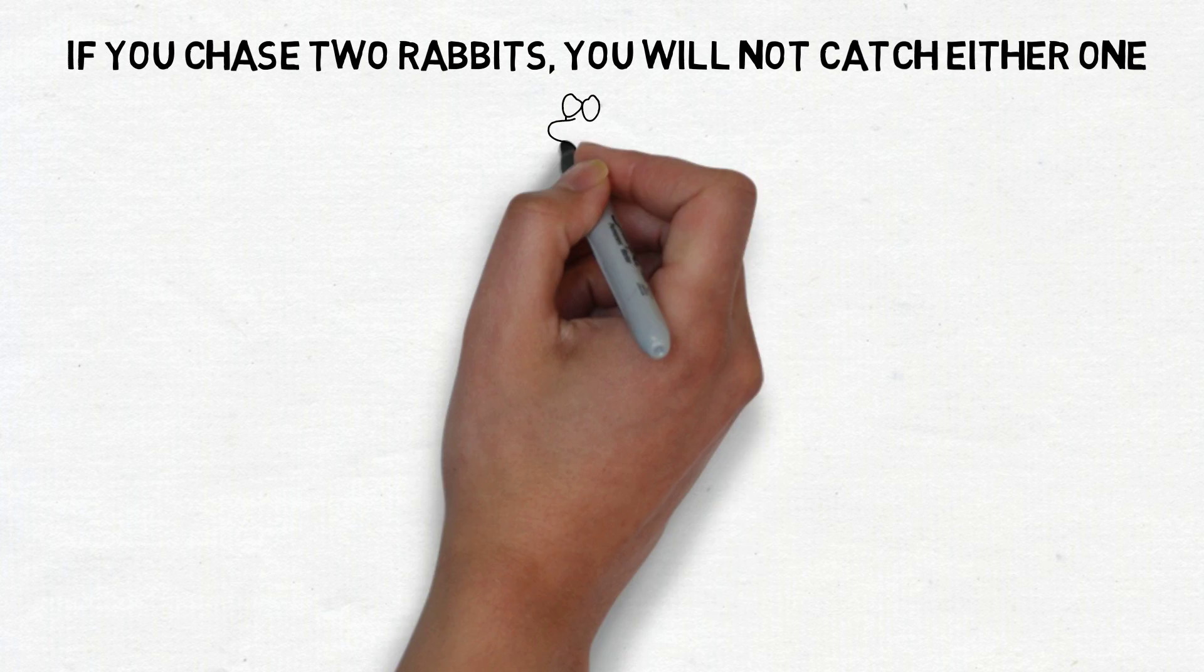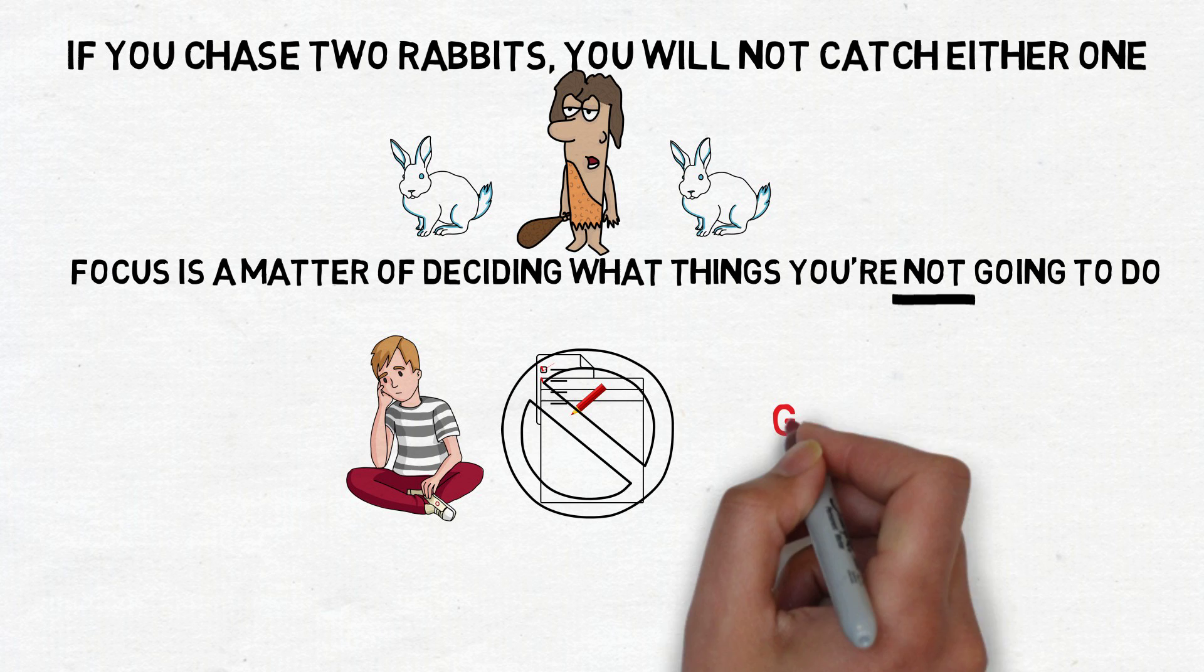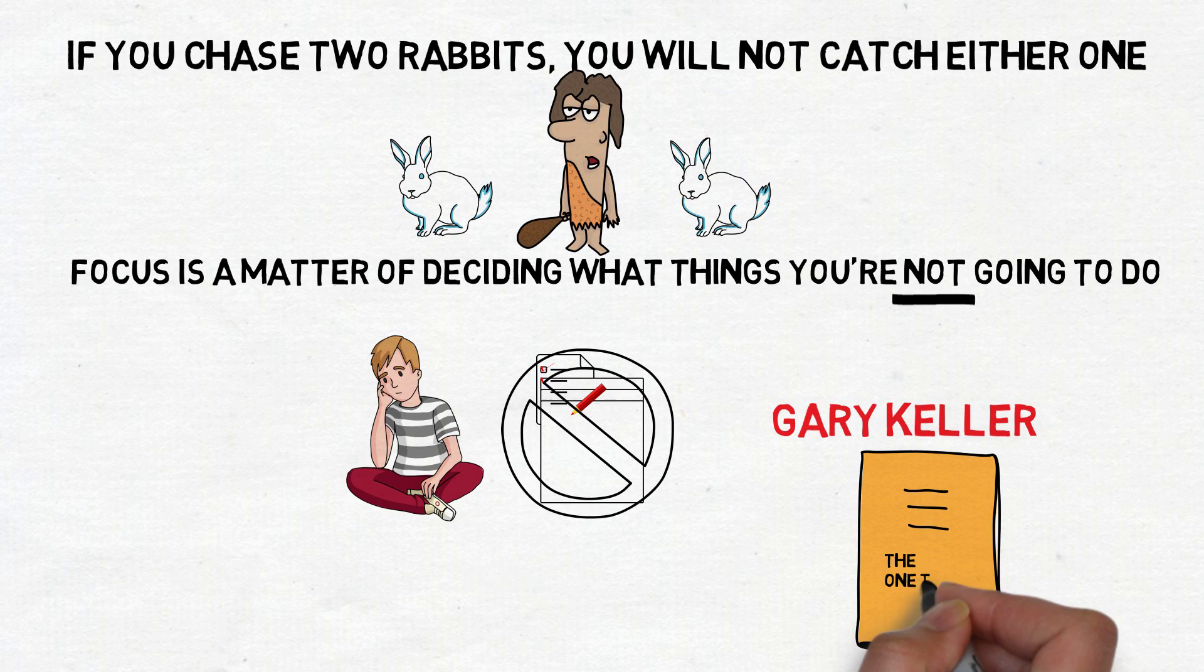If you chase two rabbits, you will not catch either one. Focus is a matter of deciding what things you're not going to do. These are the main ideas stressed by Gary Keller in his book The One Thing.